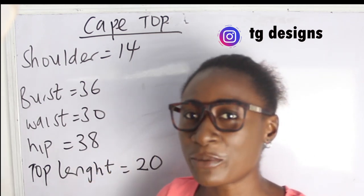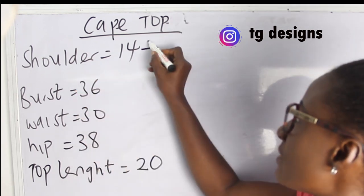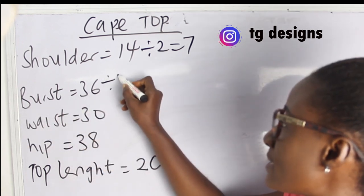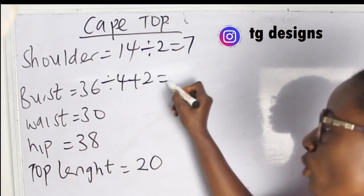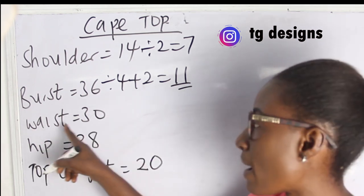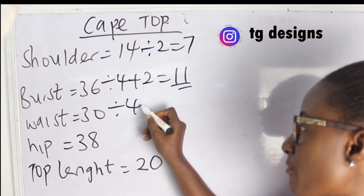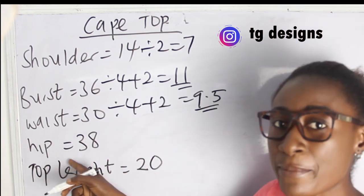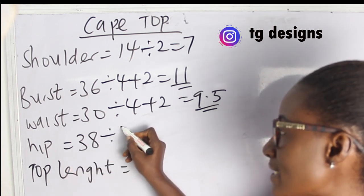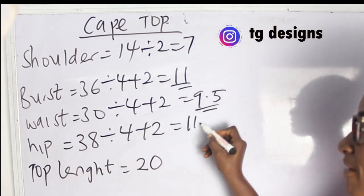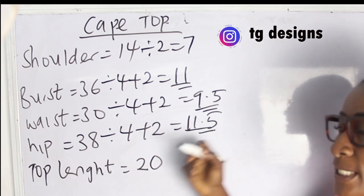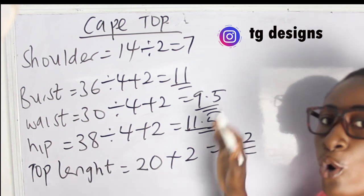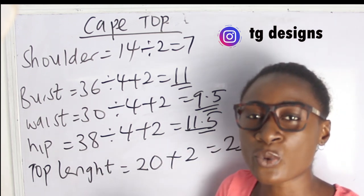Let's go ahead and calculate our measurements. Our shoulder measurement is 14; 14 divided by 2 gives us 7. Our bust is 36; 36 divided by 4 plus 2 gives us 11 inches. Our waist is 30; 30 divided by 4 plus 2 gives us 9.5 inches. Our hip is 38; 38 divided by 4 plus 2 gives us 11.5 inches. Our top length is 20 plus 2 inches, giving us 22 inches.